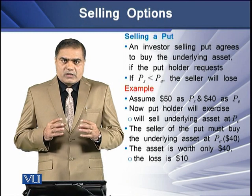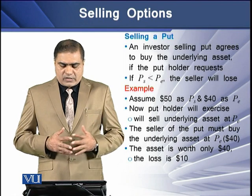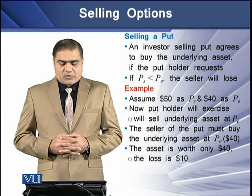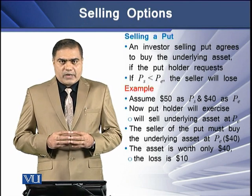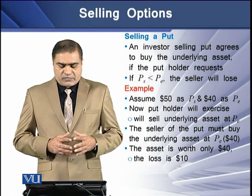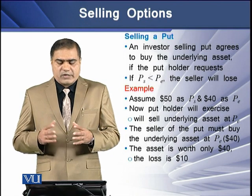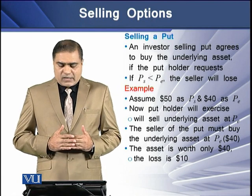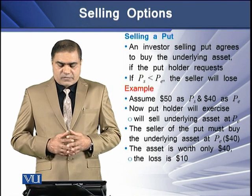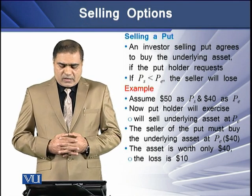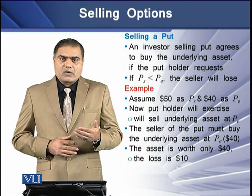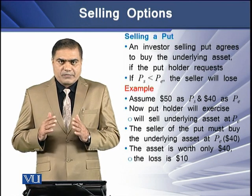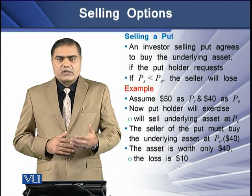Now if the market price of the underlying asset is less than the exercise price, the seller will lose a certain amount of cash. For example, assume that the market price of an underlying asset under a put contract is $50, whereas the exercise price is $40. The put holder will exercise because he will sell the underlying asset at the exercise price, and the seller of the put must then buy the underlying asset at the exercise price of $40. This means the asset is worth $40 only, and there is a $10 loss in this transaction.